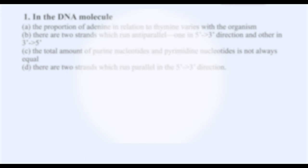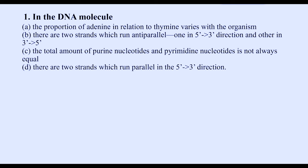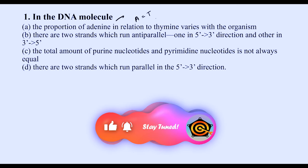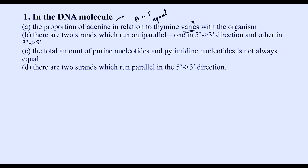The first question is about a DNA molecule. The option A states that the proportion of adenine in relation to thymine varies with the organism. Actually, A will always be equal to T in all organisms — it is not going to vary. So option A is wrong.